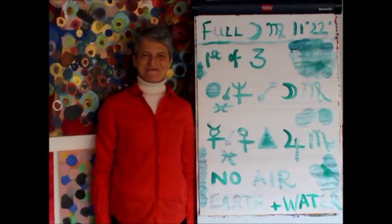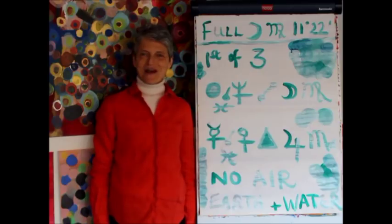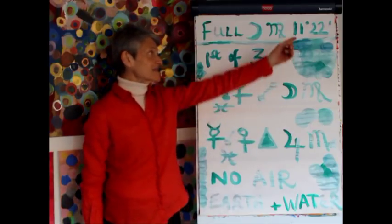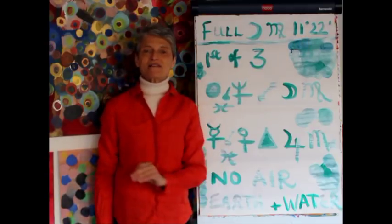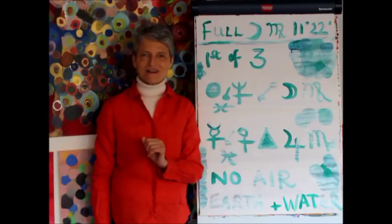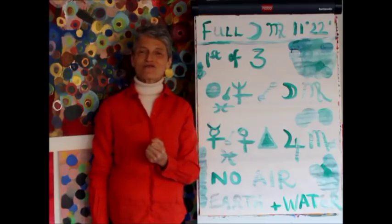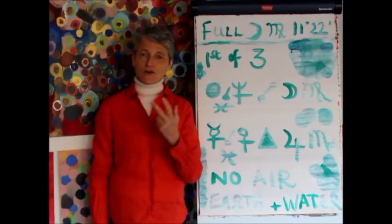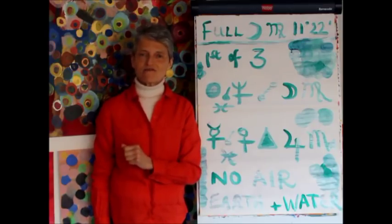Hi everybody, on March 1st we've got a full moon in Virgo at 11 degrees and 22 minutes - two power numbers, 11 and 22 - so it's a strong full moon. Unusually, we've got three moon events in Virgo this year. It's the first of three.